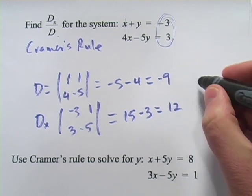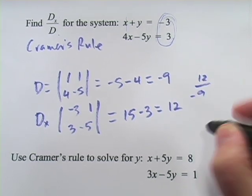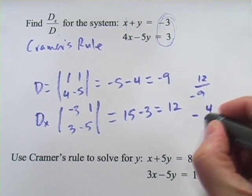So that's going to be this over this, 12 over negative 9, or what is that? A negative 4 thirds.